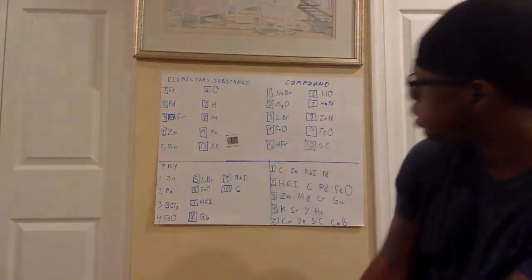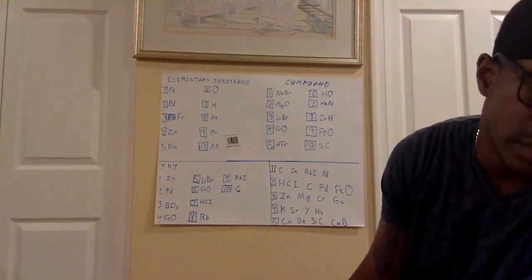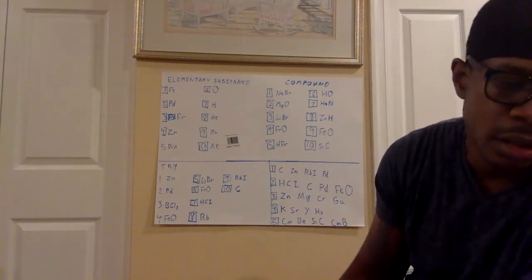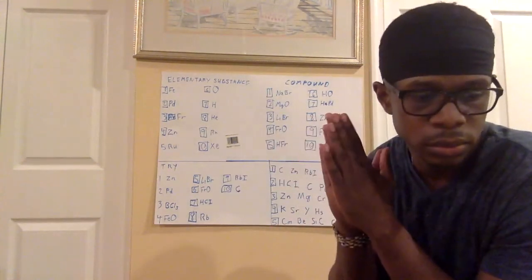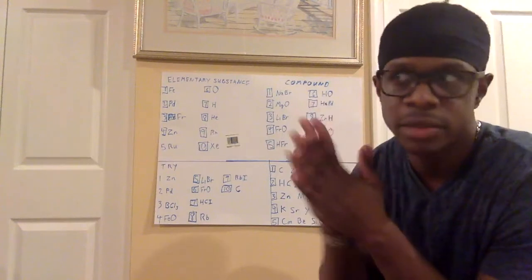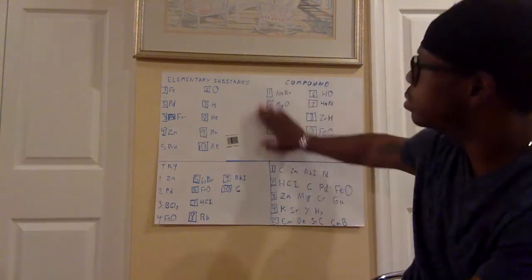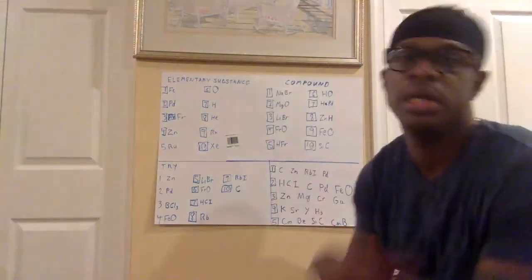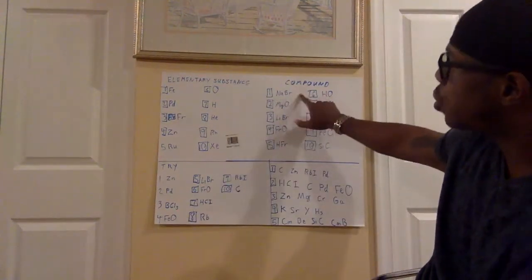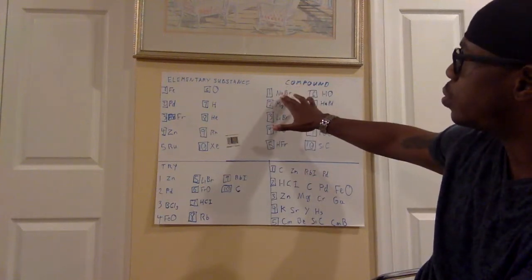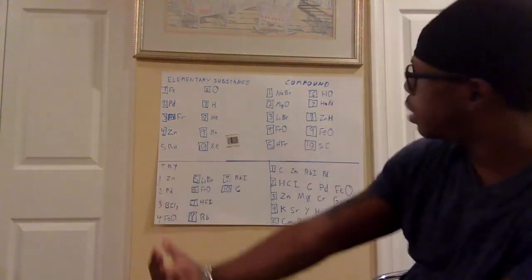And lastly, number ten: SiC. Si is one atom — silicon — and then C by itself is another. C by itself is carbon. So that's two atoms. All of these are two atoms each. A compound can have more than two atoms — I could put NaBrHO, and we would still say it's a compound because it needs two or more. Elementary substance is one; compound is two or more.